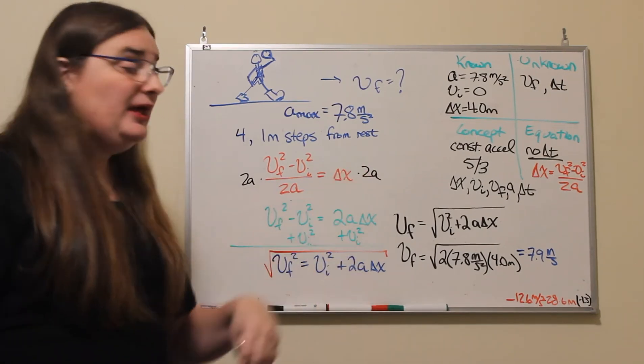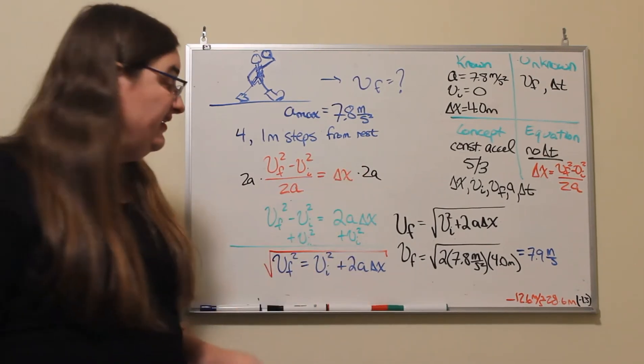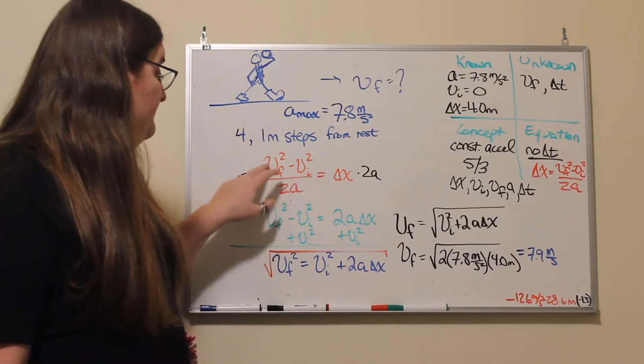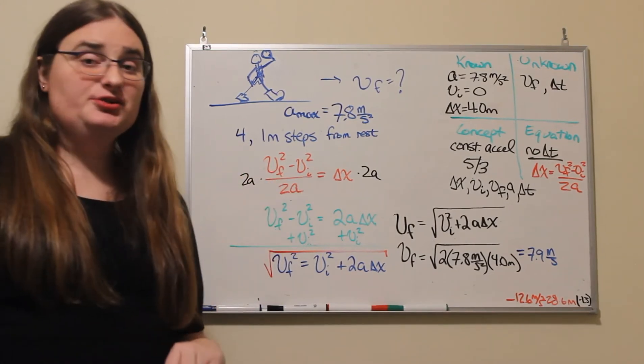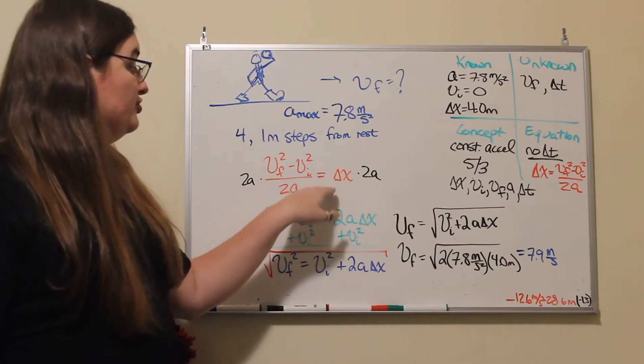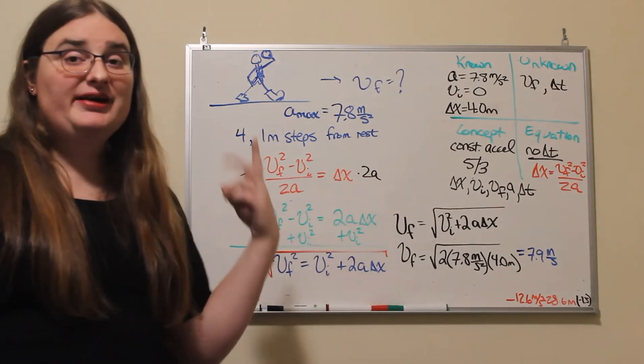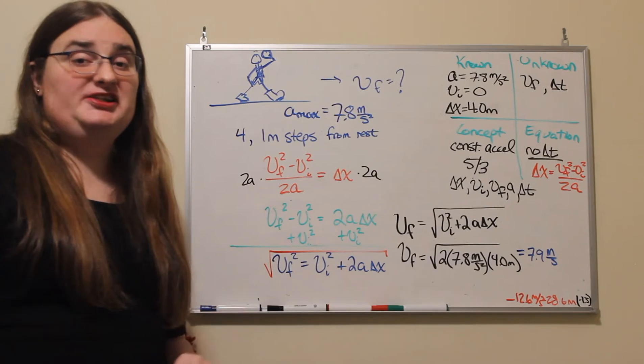So if I multiply both sides by 2 times a, I get rid of my denominator, and I have v final squared minus v initial squared is equal to 2 times my acceleration times my displacement.